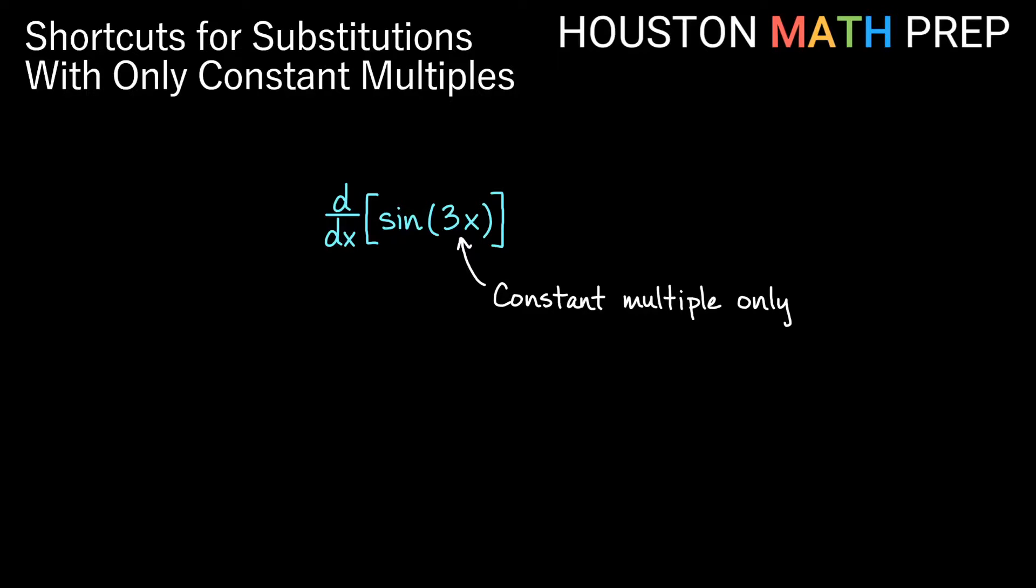So when we do the chain rule for derivatives we start outside first and we say derivative of sine is cosine, leaving the inside alone. So we have cosine of 3x. The chain rule then times the derivative of the inside, we would get times 3 out front.